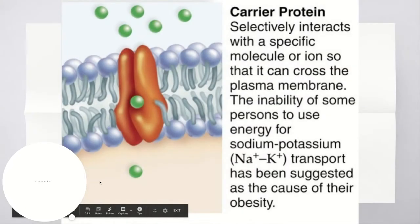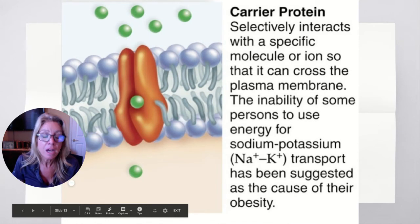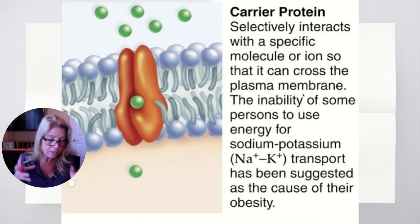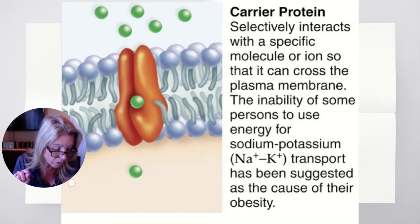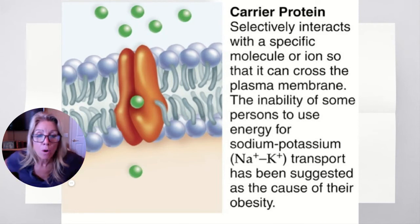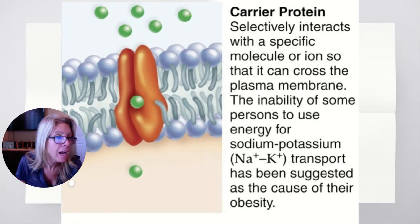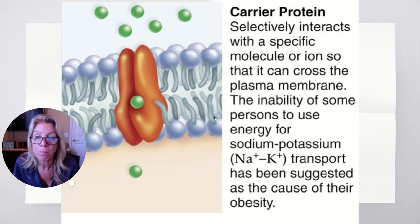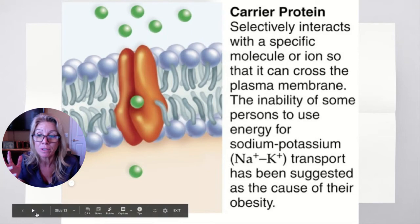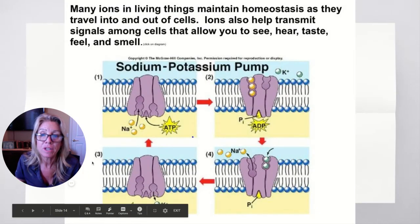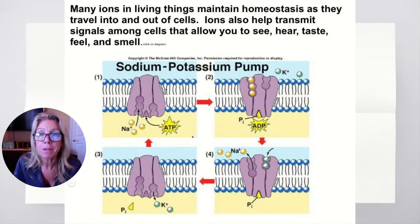On your notes: carrier proteins selectively interact with a specific molecule so it can cross the membrane. One very famous pump — where it costs energy — is the sodium-potassium pump. This is how all your nerves and muscles work. There's a spot for three sodium ions to bind as well as a spot for ATP to bind in this protein pump that is in the cell membrane.